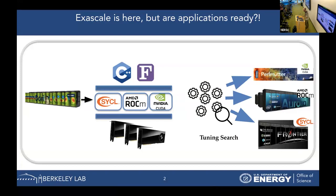Modern exascale supercomputers are massively composed of GPUs, and programmers have to offload their codes to the GPU. These GPUs come from different vendors, so some programmers decide to have only one backend by writing a portable language like Kokkos,